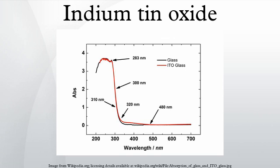Because of the bandgap, ITO is mostly transparent in the visible part of the spectrum and its extinction coefficient K in this wavelength range is zero. In the ultraviolet, it is opaque, so K is non-zero in the UV spectral range because of band-to-band absorption. It is also opaque in the near-infrared and infrared because of free carrier absorption.